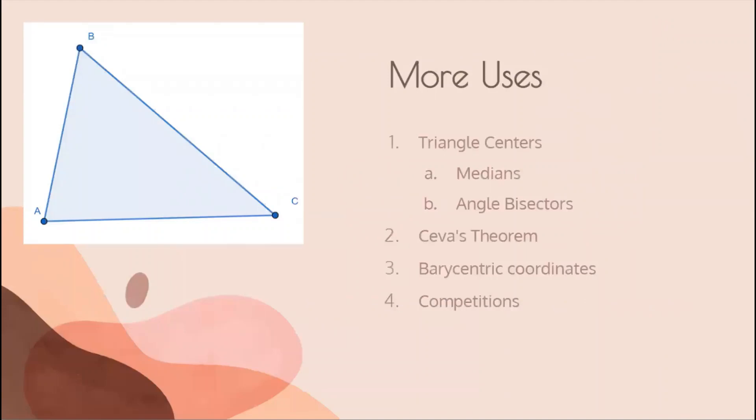So what is mass points important for? Well, here are some examples of its uses. Since it looks at concurrent cevians, we can use it to prove that the three medians intersect at one point, which you may know as the centroid. If you don't know, medians are the lines from each point to the midpoint of the opposite side. We can do this by first drawing two of the medians, so like this and this.